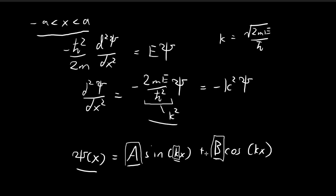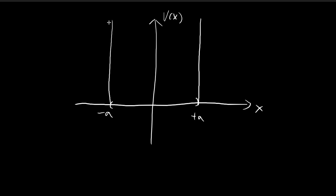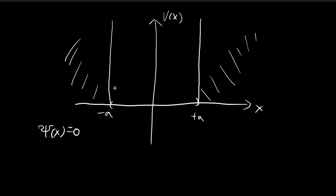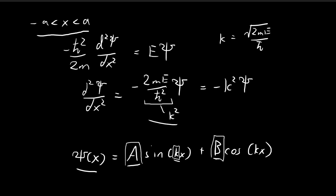To find these constants, we apply continuity requirements. We know ψ(x) must be continuous, and for the infinite square well, ψ(x) is equal to 0 outside the region. So for continuity, the wavefunction at the endpoints must equal 0. That means at both x equal to negative a and x equal to positive a, ψ(x) must equal 0. This gives us two equations to work with.